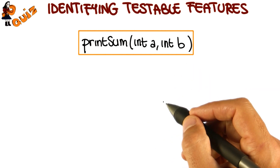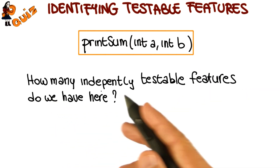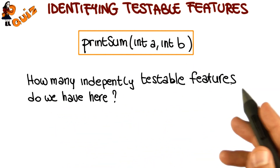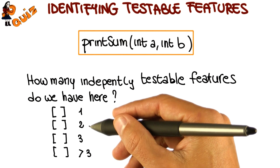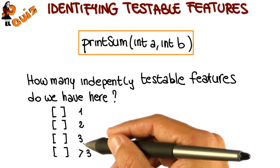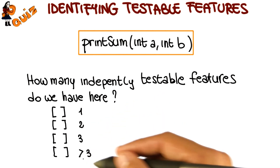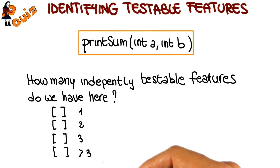So how many independently testable features do we have here? Do we have one, two, three features, or more than three features?